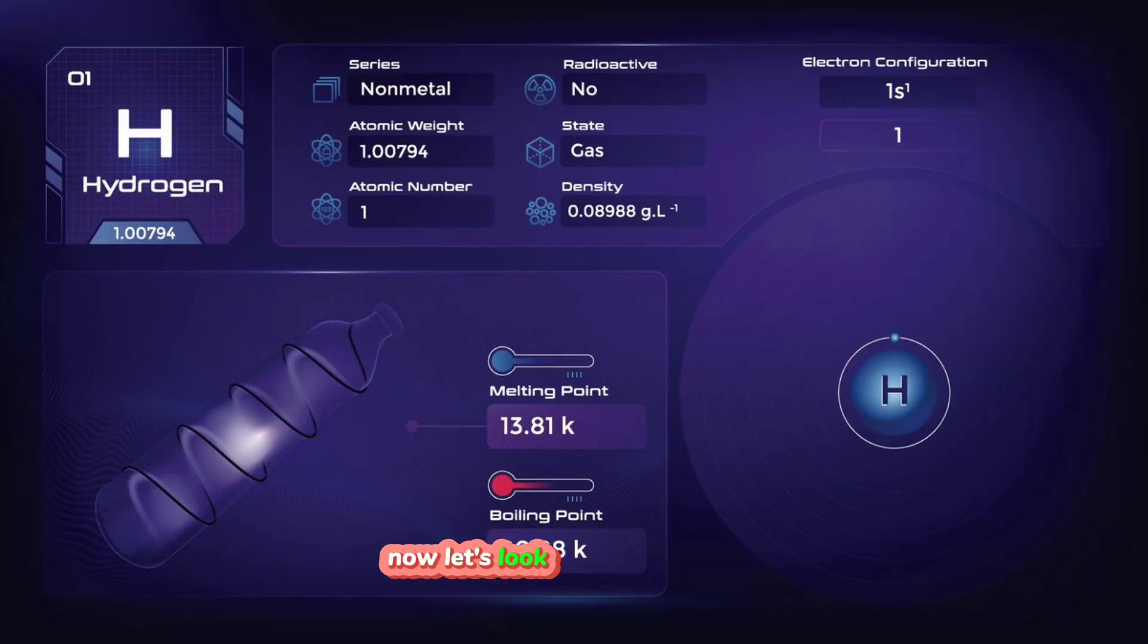Now, let's look at a few examples. 1. Hydrogen. Hydrogen has one electron. Its electronic configuration is 1s¹. This means there is one electron in the first energy level, n equals 1, and in the s orbital.